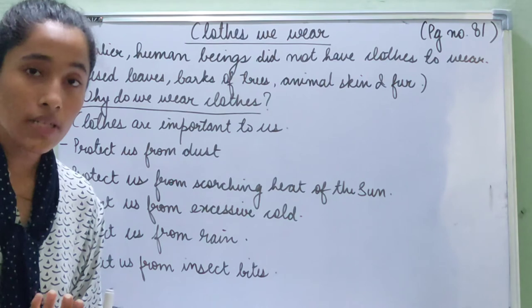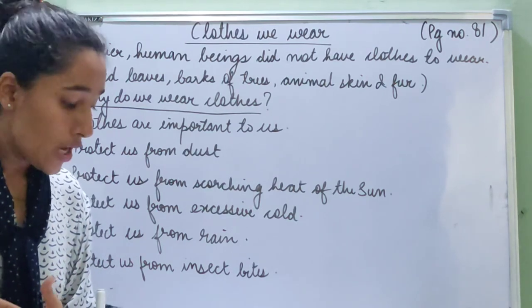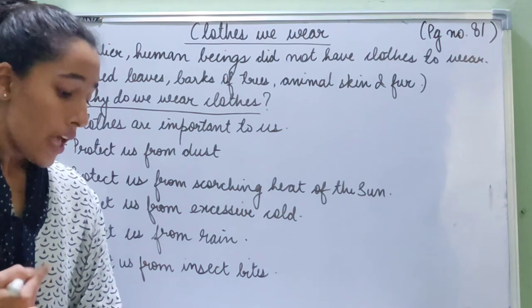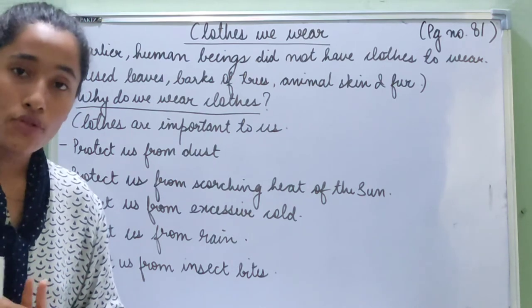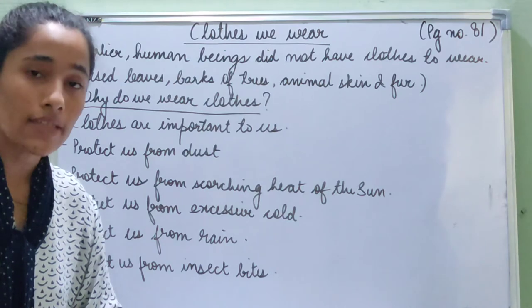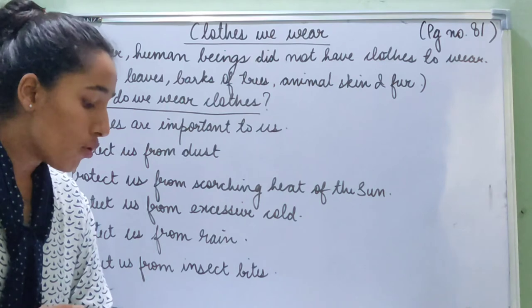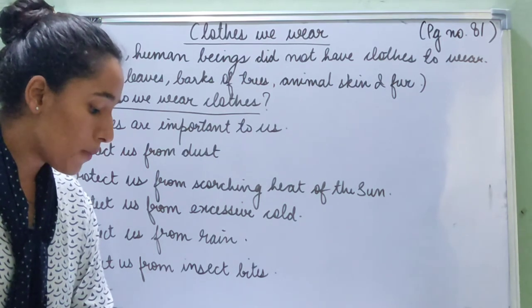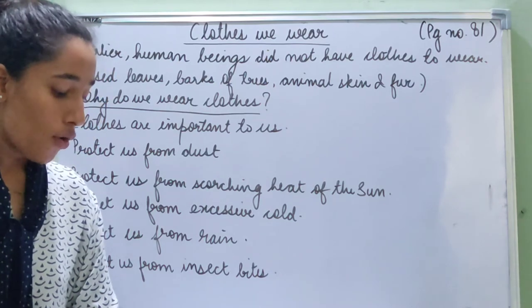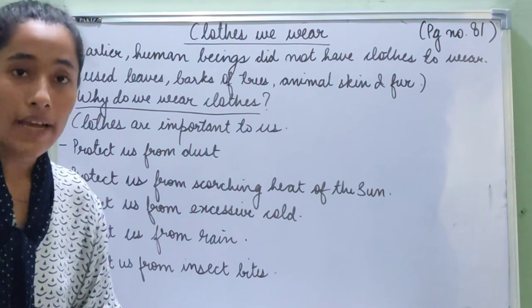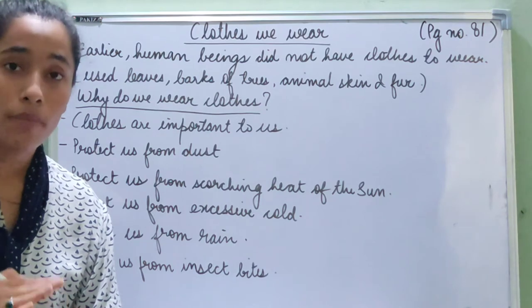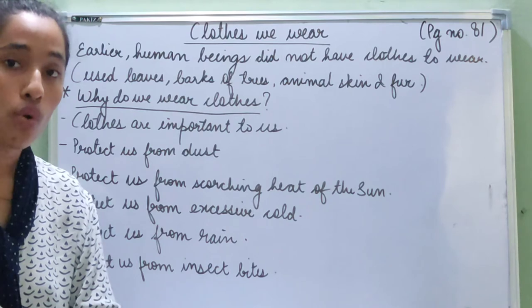Clothes protect us from the scorching heat of the sun. When we go outside on a sunny day for a long period of time, the exposed parts of our body become tanned and sometimes we get sunburns. If you notice your hands on a sunny summer day, they get dark, tanned, and sometimes even sunburned. So we realize that clothes protect us from the scorching heat of the sun.